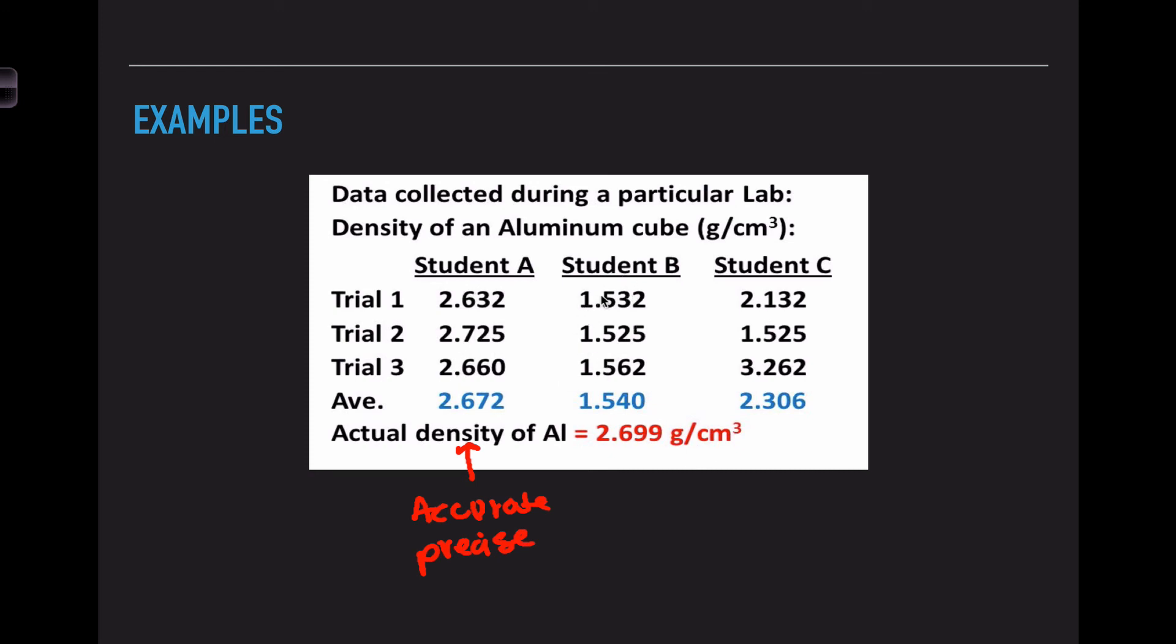Now student B had 1.53, 1.52, and 1.56. I would consider these precise but not accurate because when we look at the actual density of aluminum of 2.69, this value is not close to that - it's pretty far off. So while this range is small, they are not close to the accepted value.